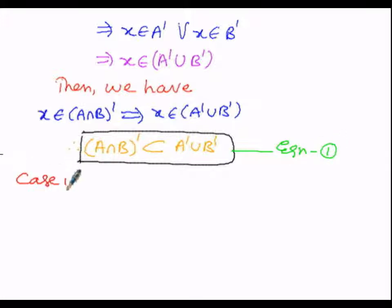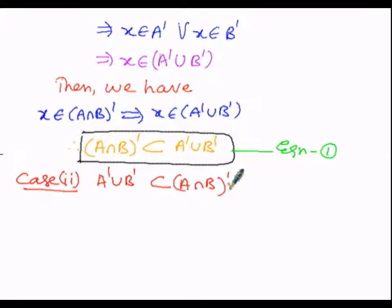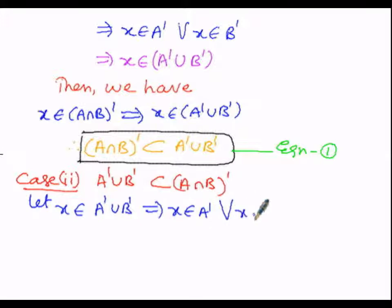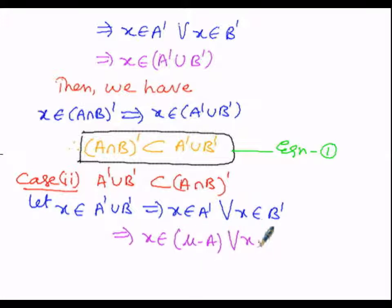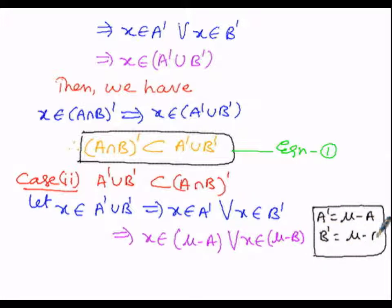Now we prove case number two: A dash union B dash must be a subset of A intersection B whole complement. Since we are proving by element-wise proof, let X be an element belonging to the LHS, A dash union B dash. That implies X belongs to A dash or X belongs to B dash. In the next logical step, since A dash equals mu minus A and B dash equals mu minus B, we can write X belongs to mu minus A or X belongs to mu minus B.